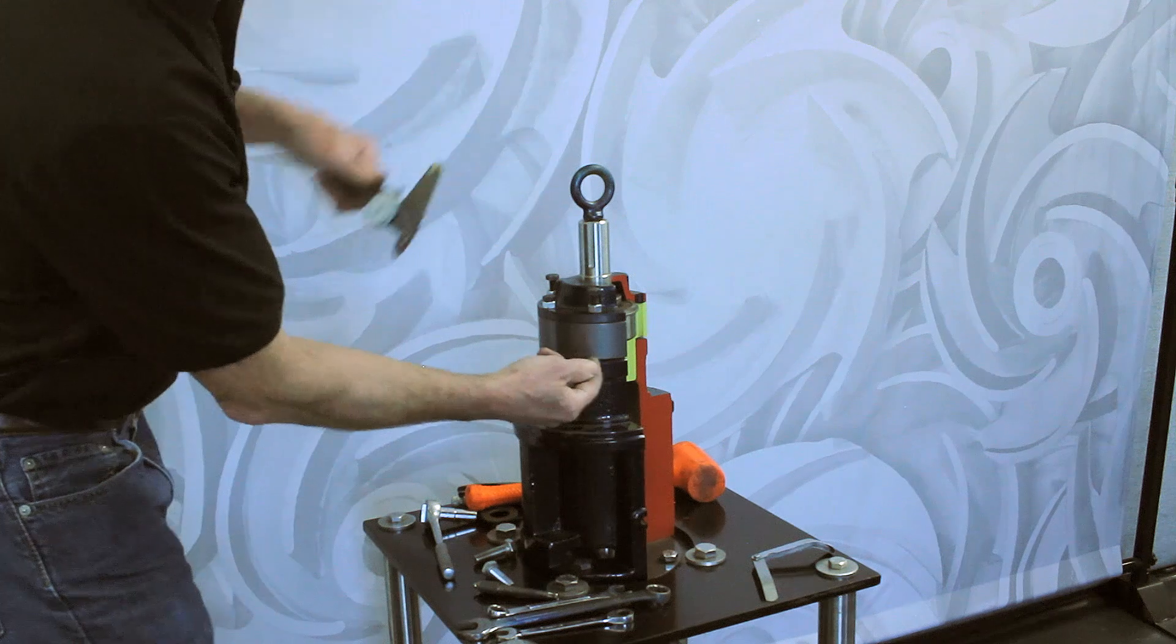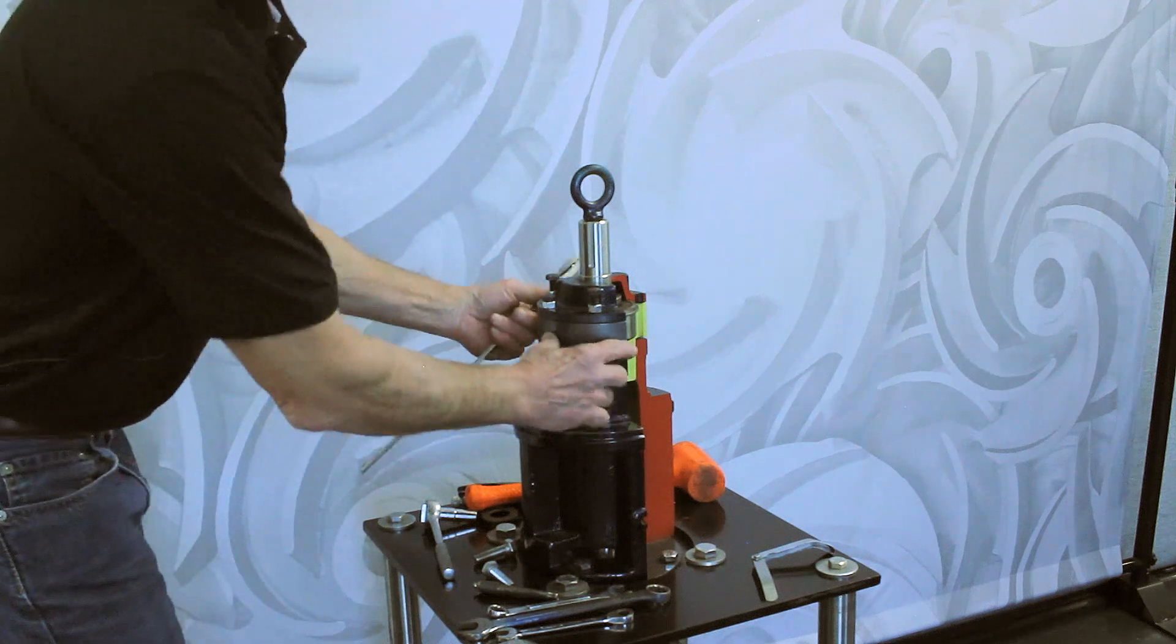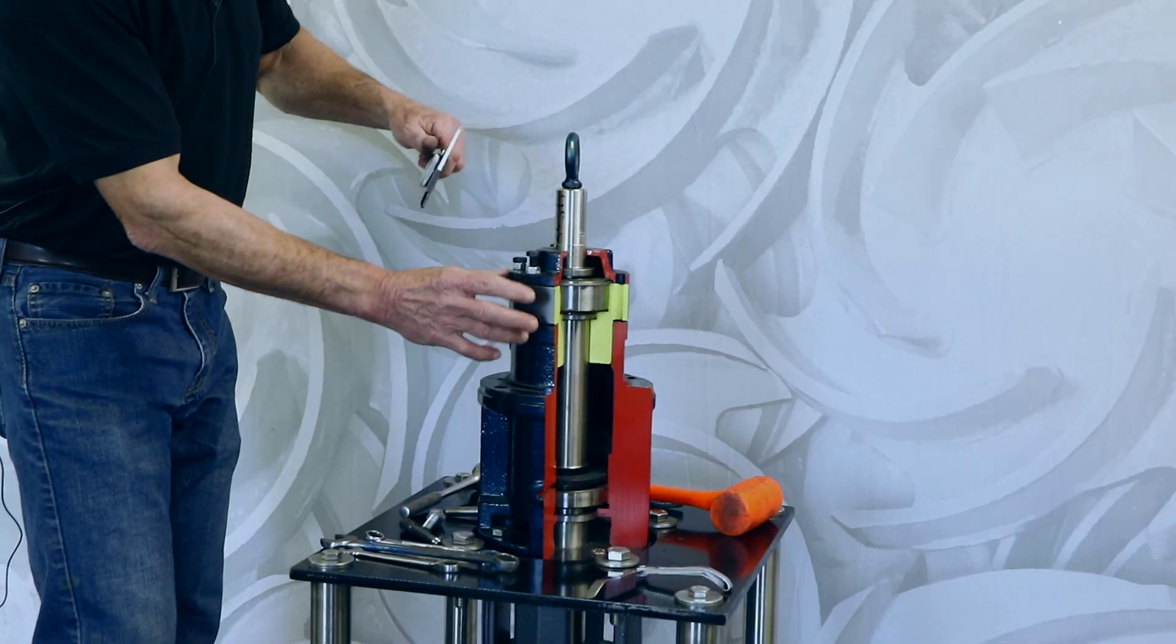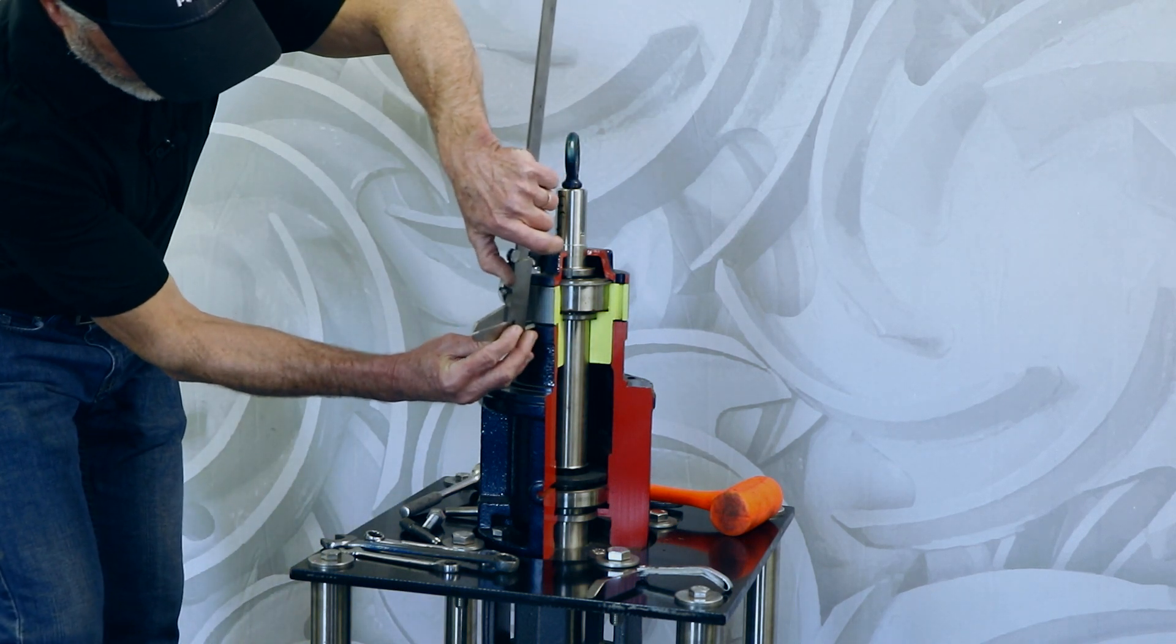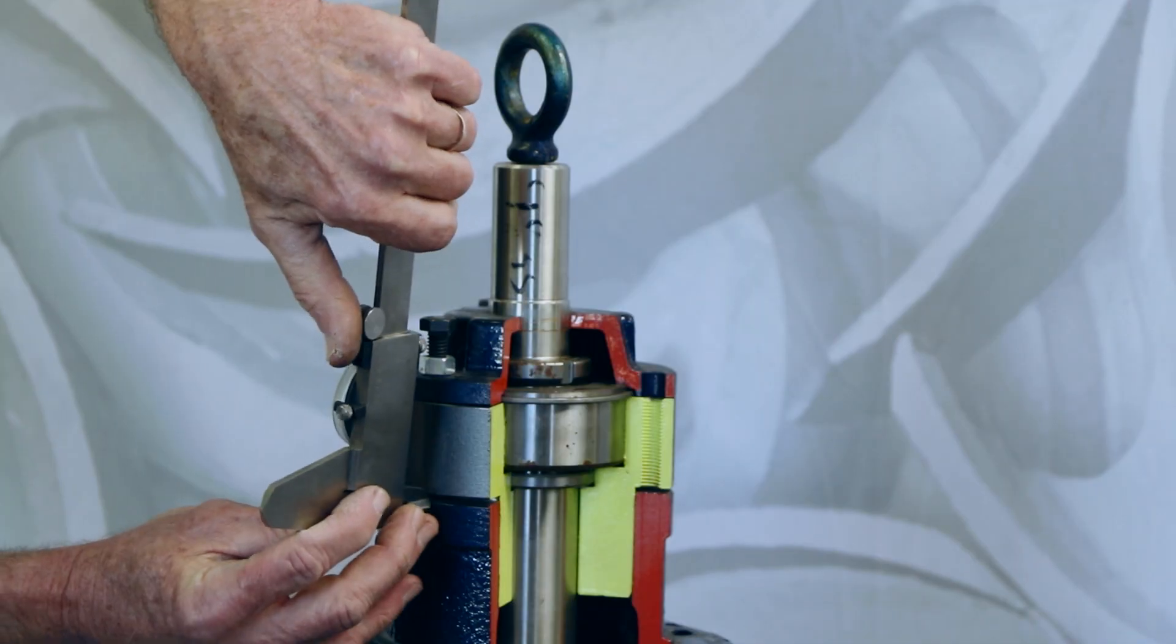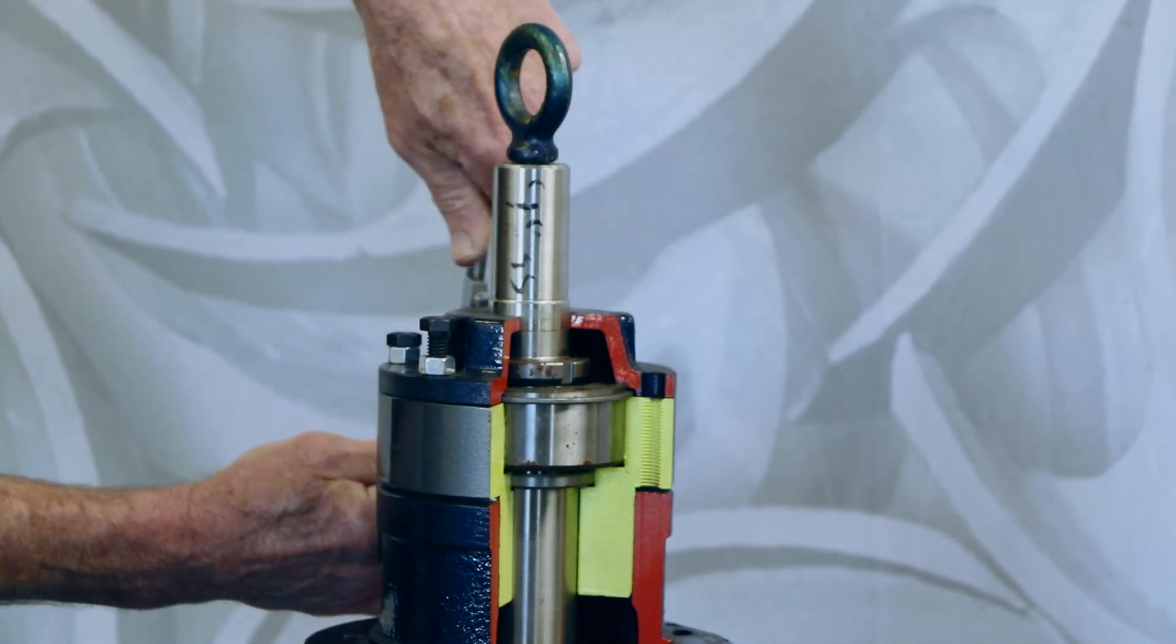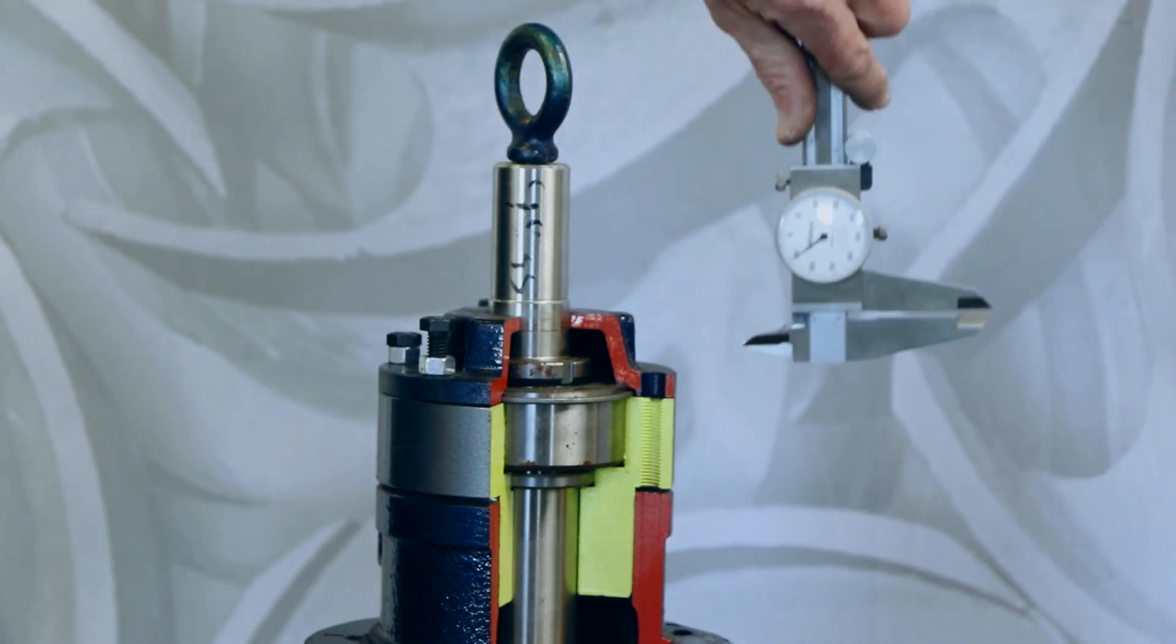One way you can check to make sure this slider is setting evenly all the way around is to take a pair of calipers and go to your three long bolts, and just out from them, check to see if you vary from one to the other.